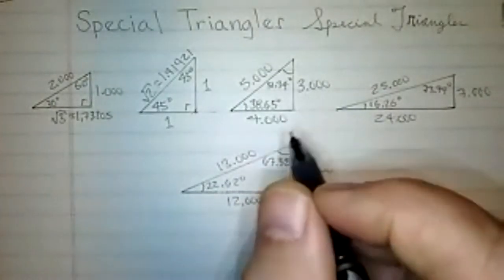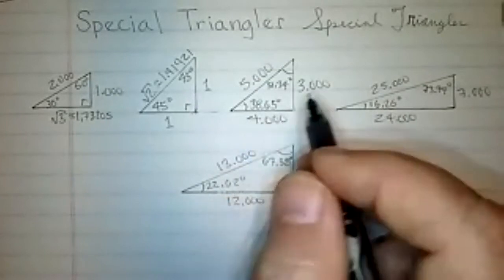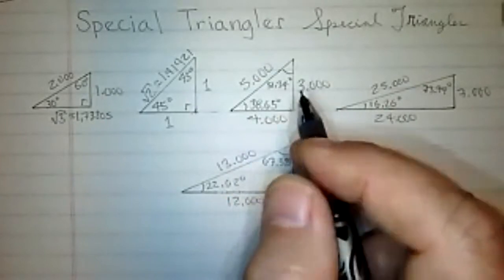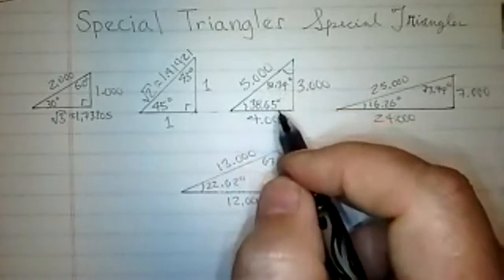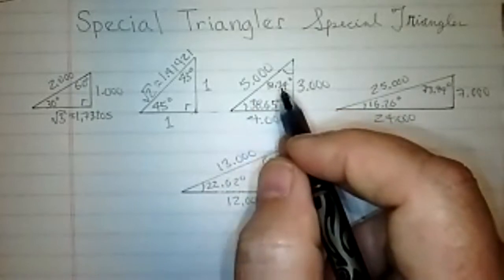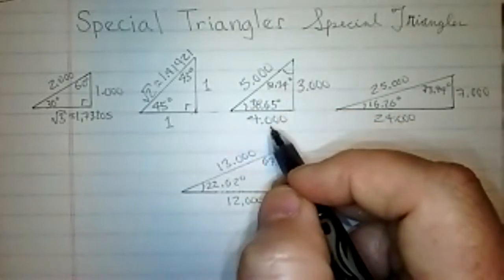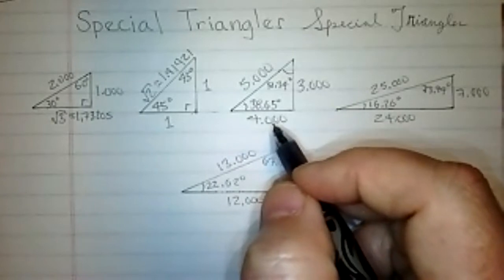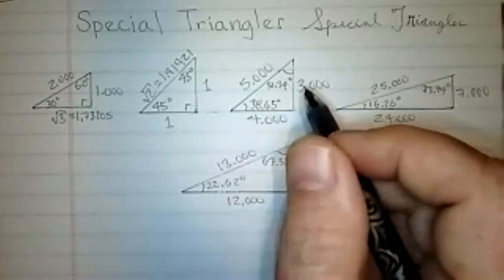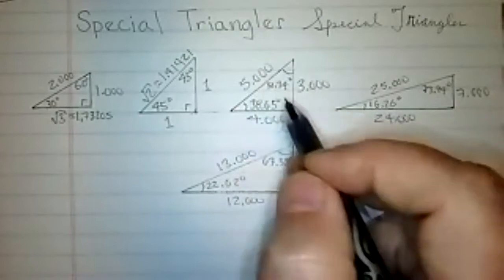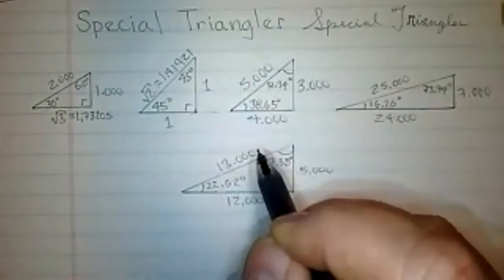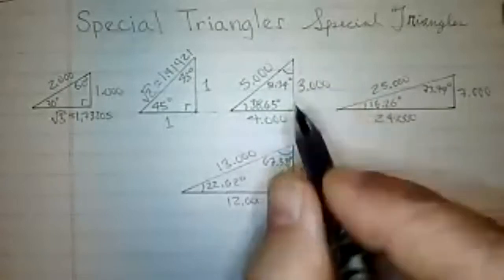Another triangle is the 345 triangle. Those angles aren't so pretty, but it is a Pythagorean triangle. So you always see, again, the largest angles opposite the largest side. So 51.34 degrees is opposite the four. The 38.65 is opposite the three. And of course, the hypotenuse is opposite 90-degree angle, and that's 5.000 is the hypotenuse.